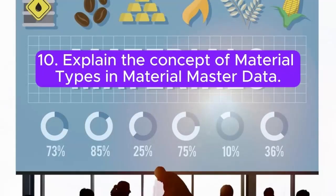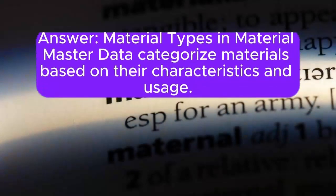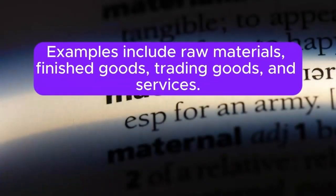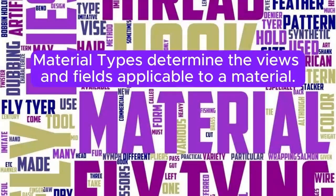Question 10: Explain the concept of Material Types in Material Master data. Material Types in Material Master Data categorize materials based on their characteristics and usage. Examples include raw materials, finished goods, trading goods, and services. Material types determine the views and fields applicable to a material.